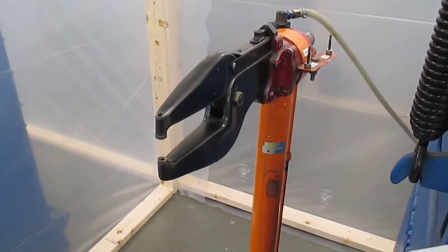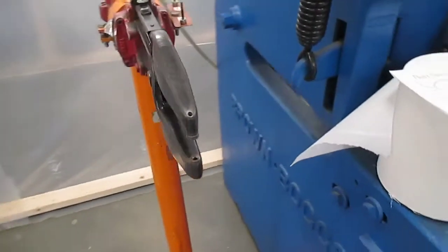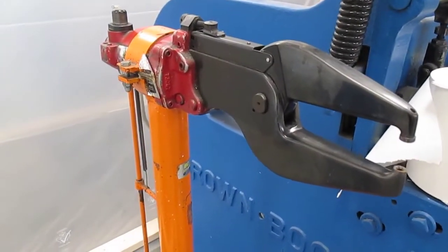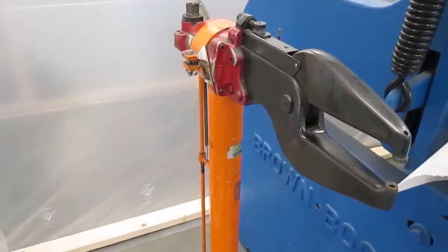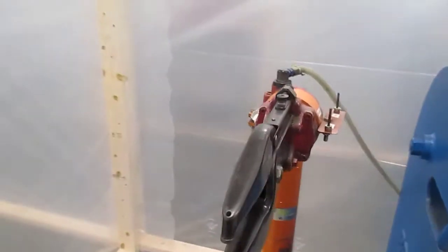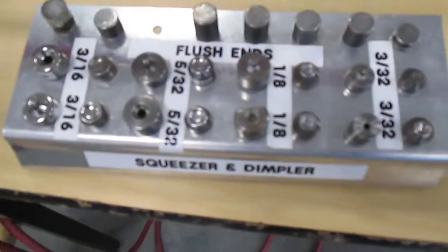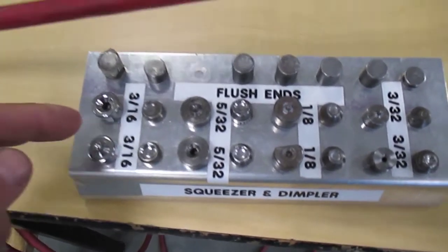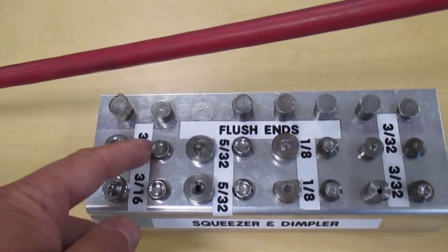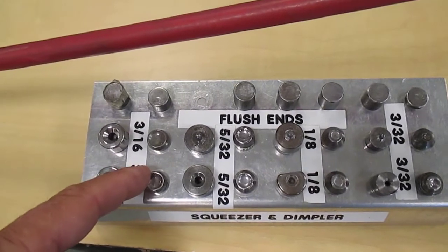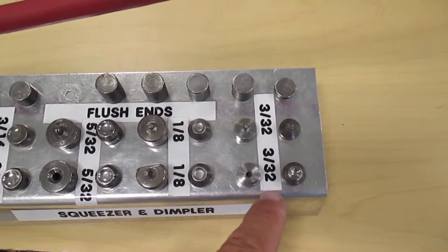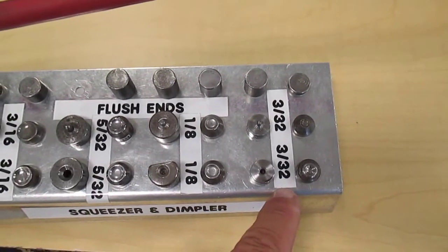Okay, let's talk about using this crazy thing called a rivet squeezer or dimpler, depending on which way you look at it. The tool itself comes with a whole bunch of different tips that you can selectively choose. You can see here we've got ones that are specifically designed for dimpling and for universal head rivets.